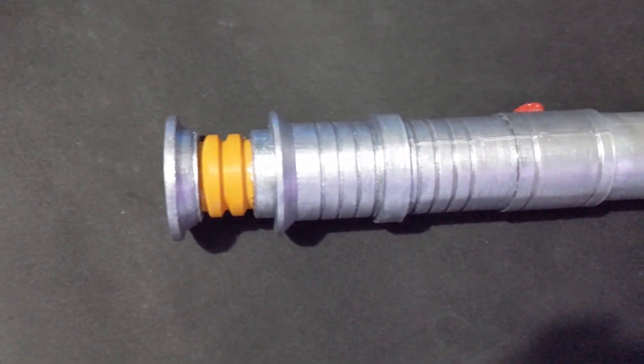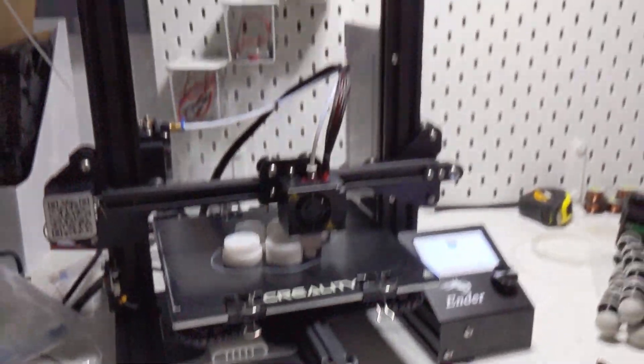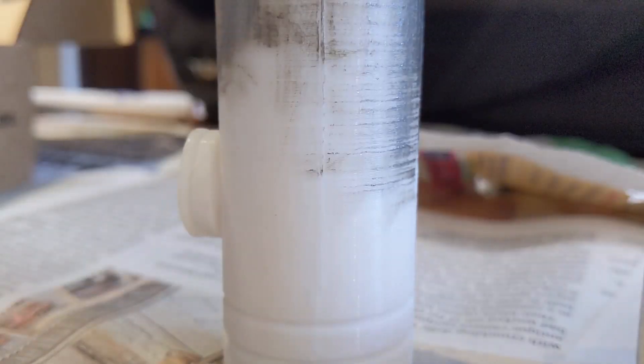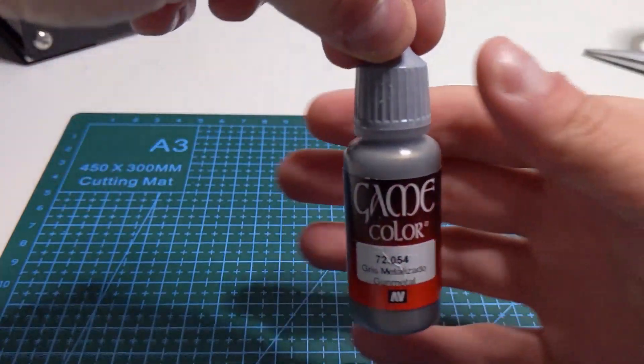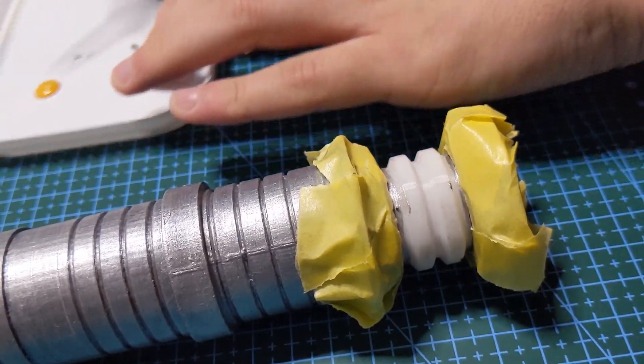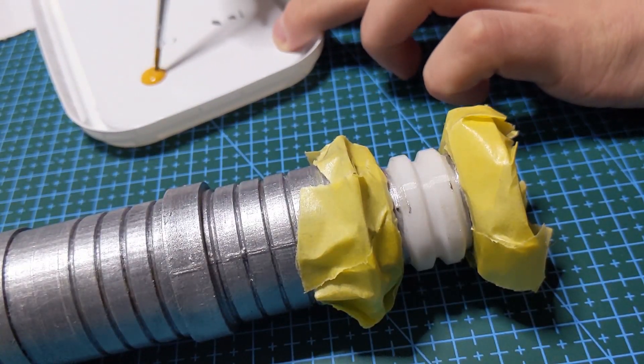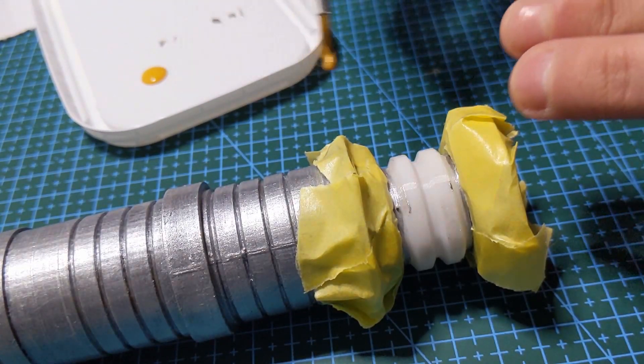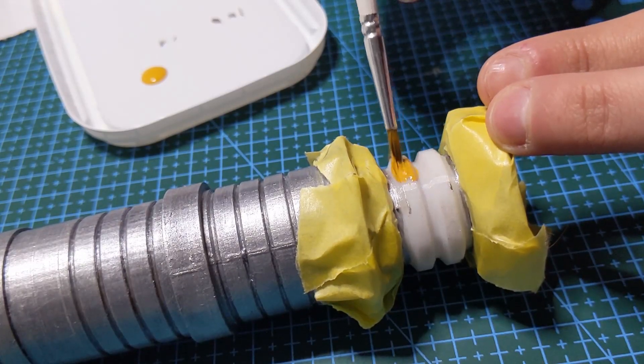The build process was basically three steps. I first 3D printed it, then I put it together, and then painted it with acrylic modeling paint. I noticed while painting it that I probably should have painted parts first and then stuck them together, so I recommend you do it that way if you're following along.